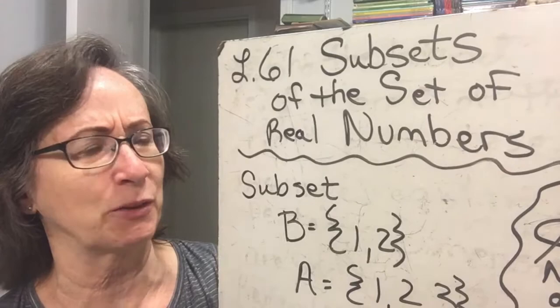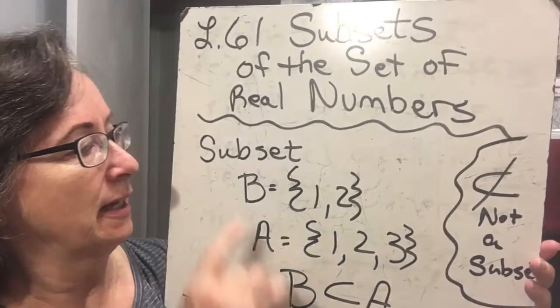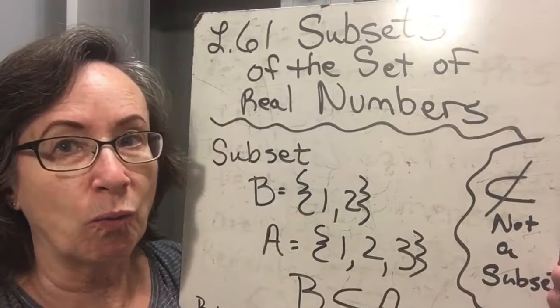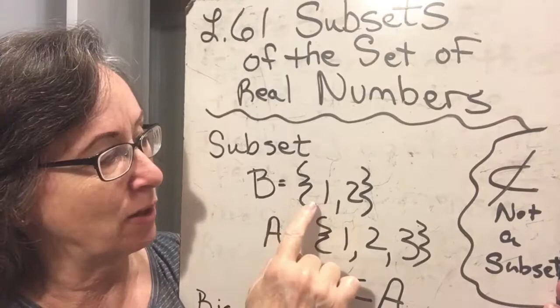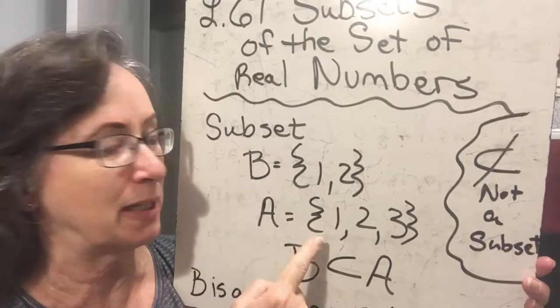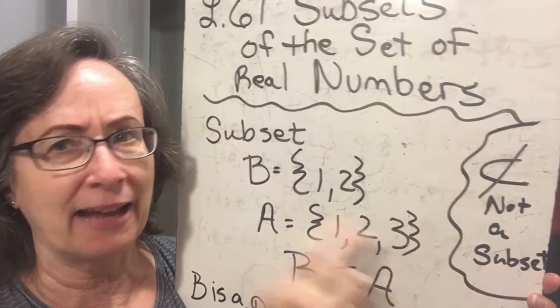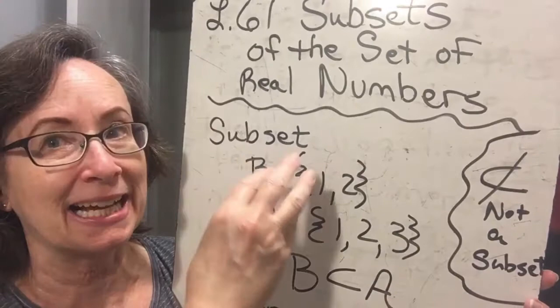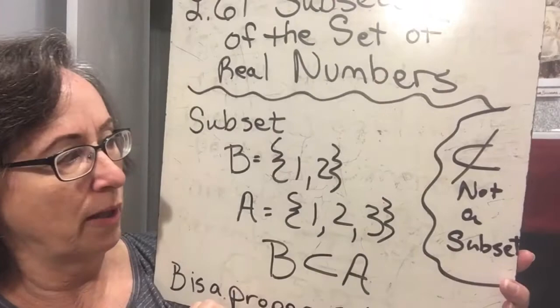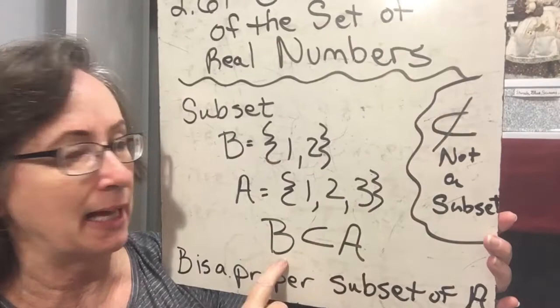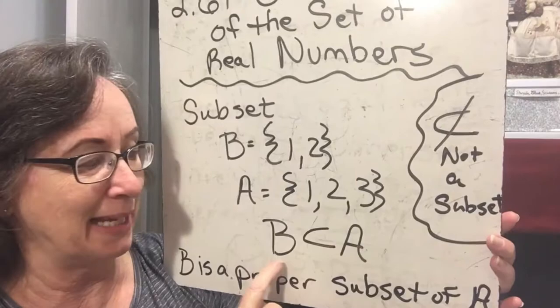First, let's talk about what it means to be a subset. A subset is the term we use when one set completely fits into another set. So if set B is {1, 2} and set A is {1, 2, 3}, we can see that B completely fits into set A with something left over in A that's not in B. We call that a proper subset because it completely fits in but it's not equivalent to set A. So B is a proper subset of A.